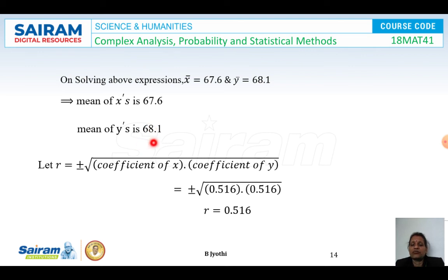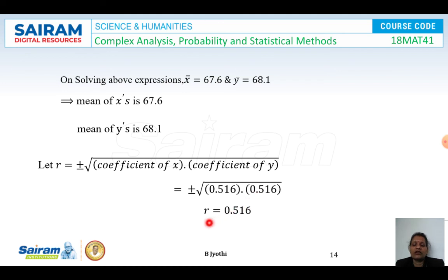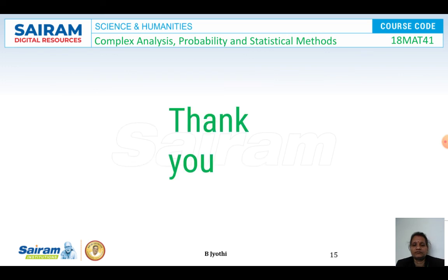To find the correlation coefficient r, we use r equals plus or minus root of (coefficient of x times coefficient of y). Here, both coefficients are 0.516 and both are positive, so r is positive. Therefore r equals plus 0.516. Thank you.